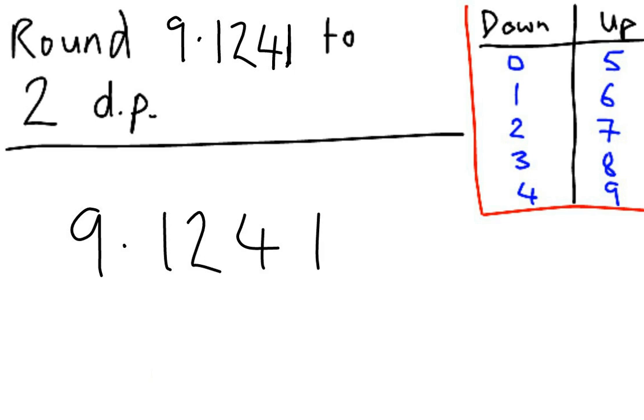And now we're being asked once again to round to 2 decimal places. So we start at the decimal point and count 1 digit, 2 digits. So this is the second digit after the decimal place, which represents our hundredths column. After that, we are going to put a line.